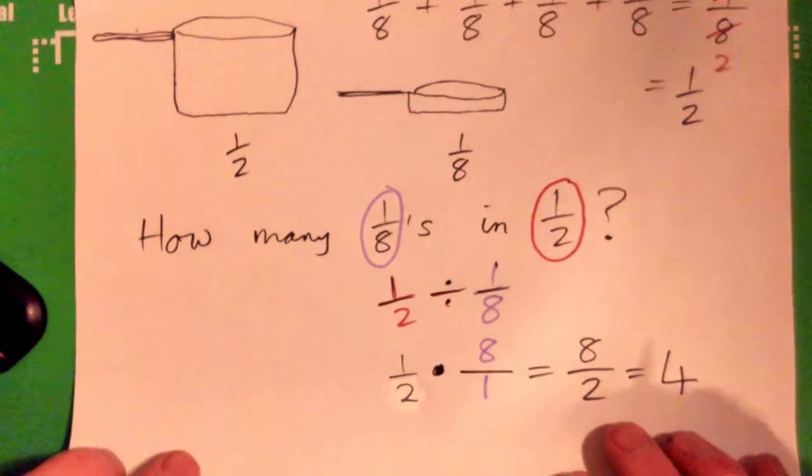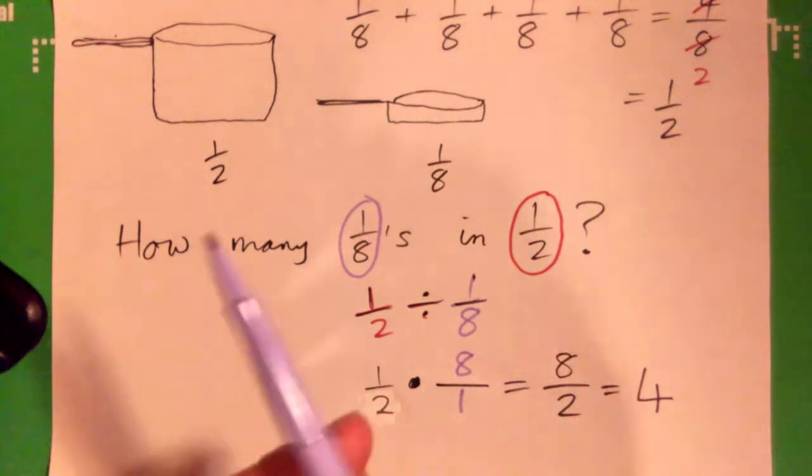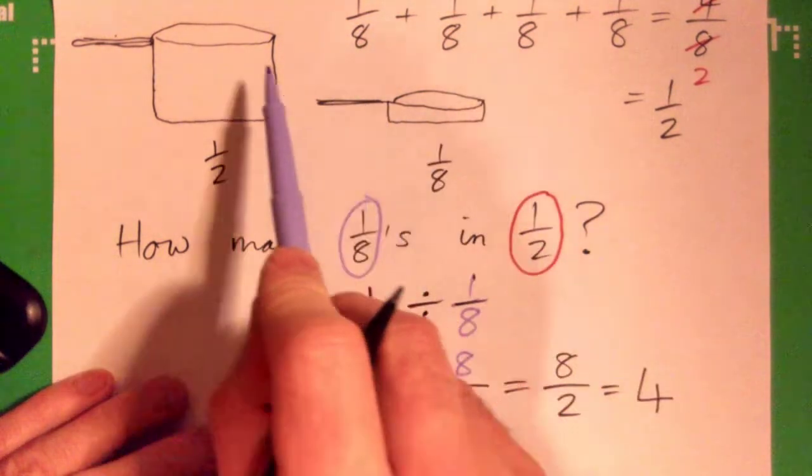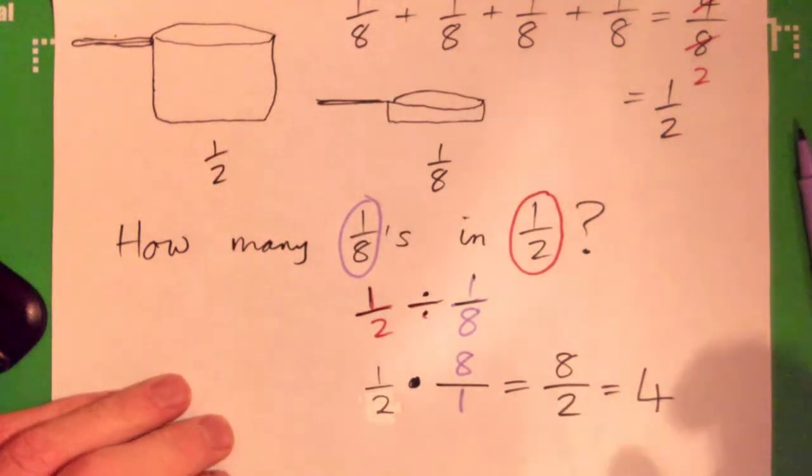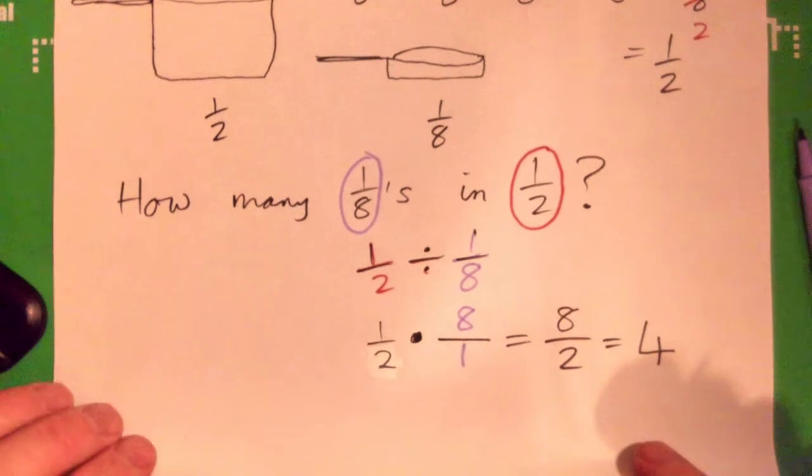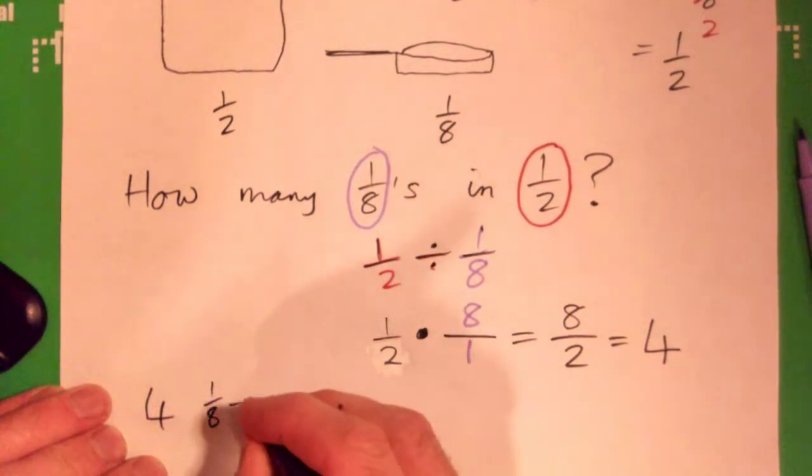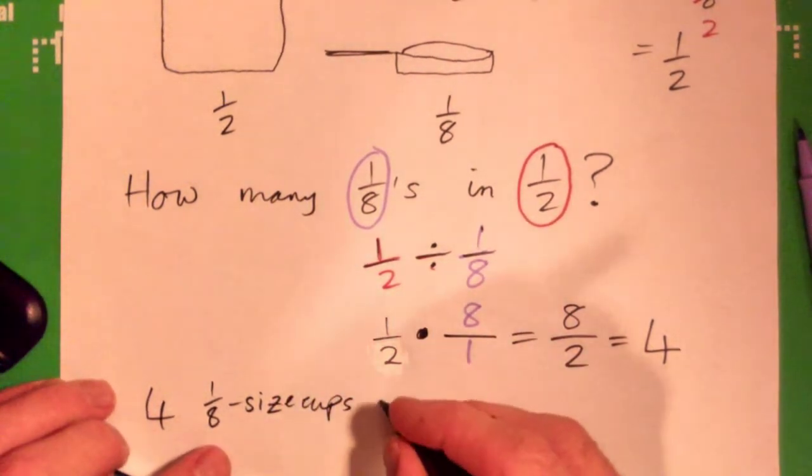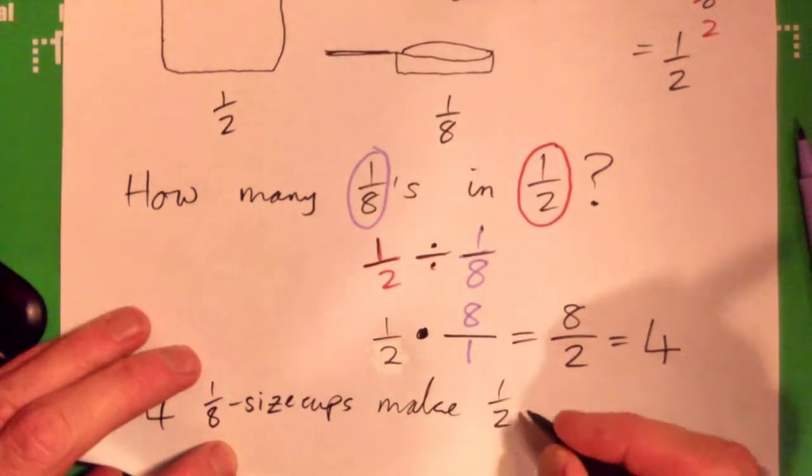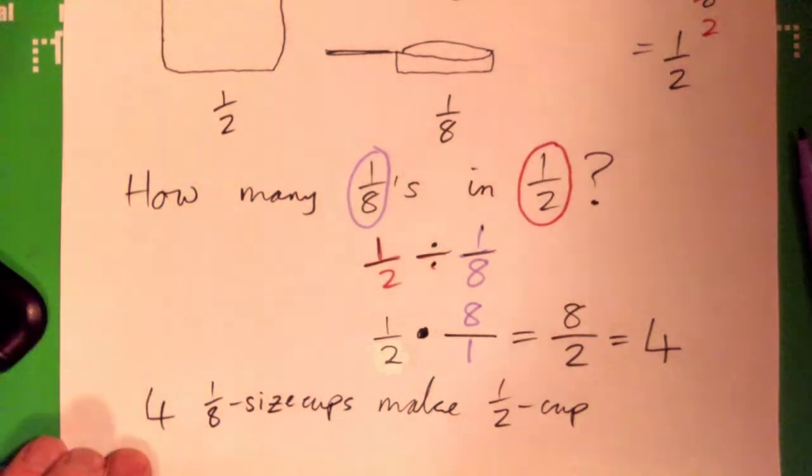So what's the answer to the real-life problem? The real-life question was, how many eighths cups do we need to fill a half a cup, right? And the answer is... Right. 4 one-eighth size cups will make the equivalent to 1 half cup, right? 4 of it. Perfect. Perfect. Perfect.